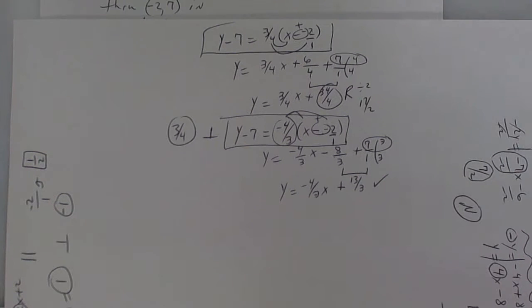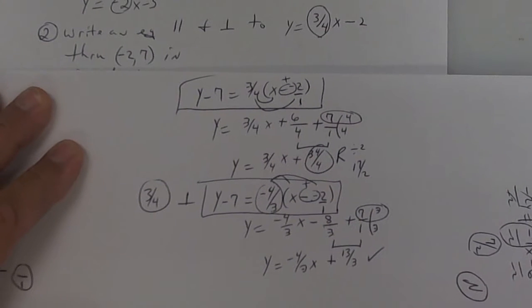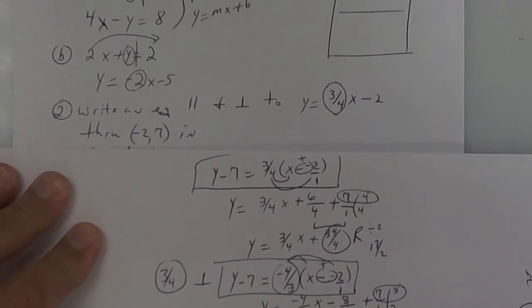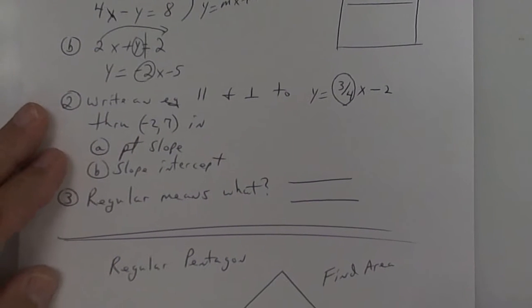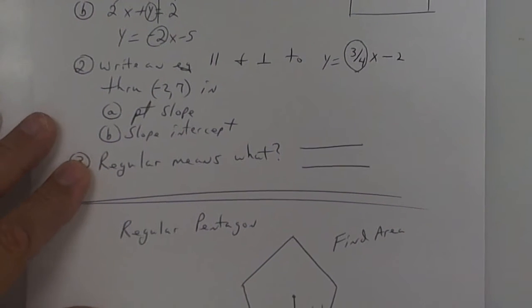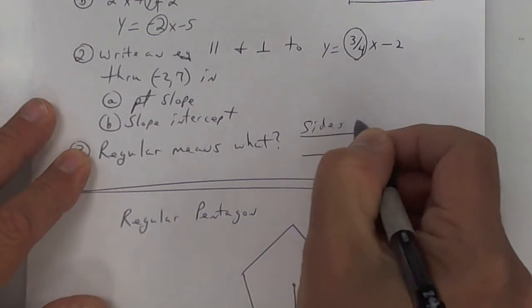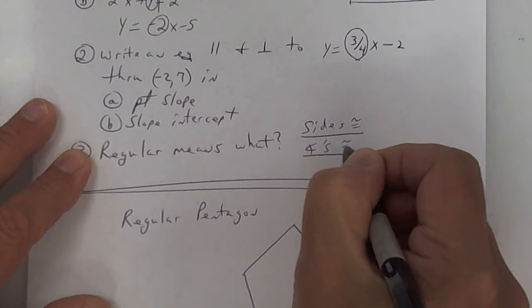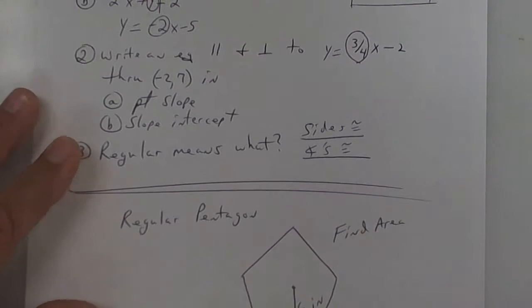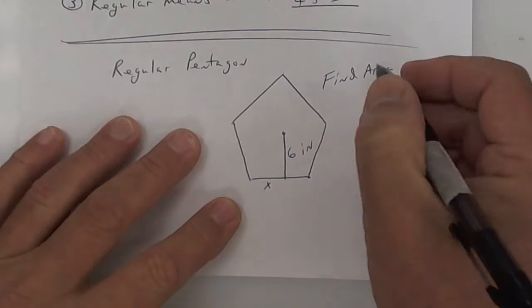These are all things you need to know how to do. On a new sheet of paper, put exam review. Put today's date so I know — put Thursday and then today's 4-26.